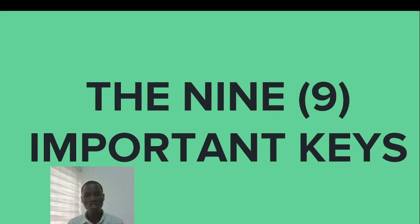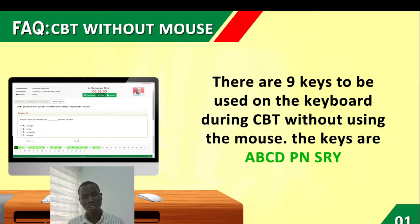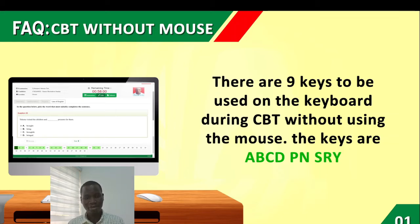Now that you know how to reprint your JAMB exam slip, let's talk about the nine important keys you need to write your JAMB examination. In most cases you might not be given a mouse at the CBT center, so you need to know how to navigate using only the keyboard. A lot of students have said they failed because there was no mouse and they didn't know how to use the keyboard. You need to be able to navigate the computer without a single click of the mouse.